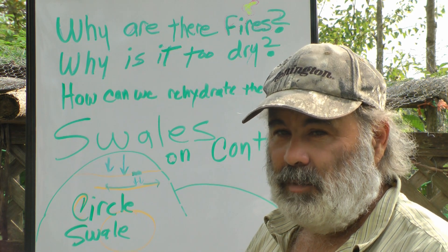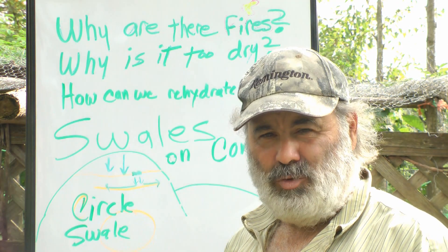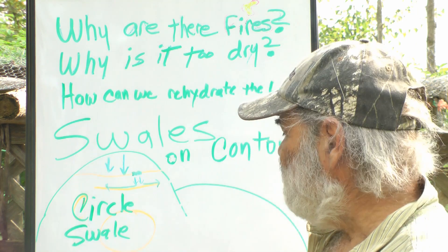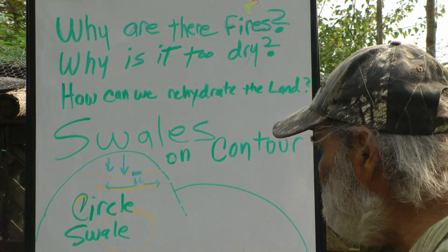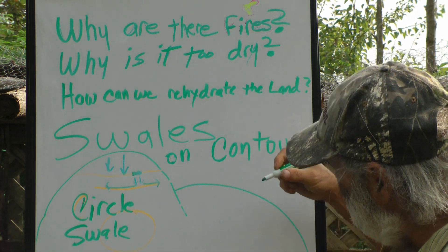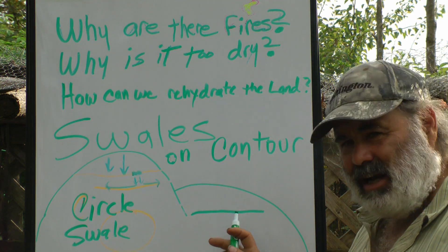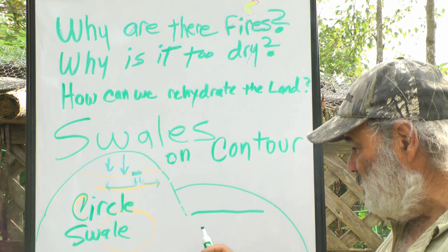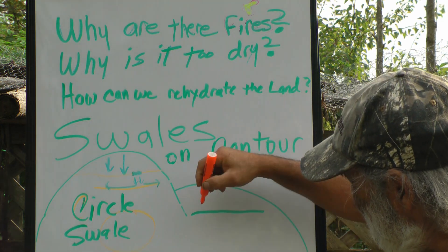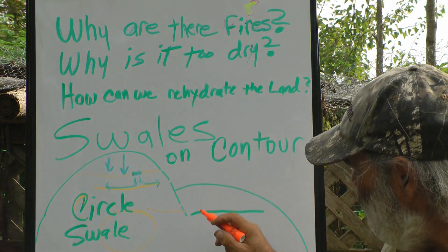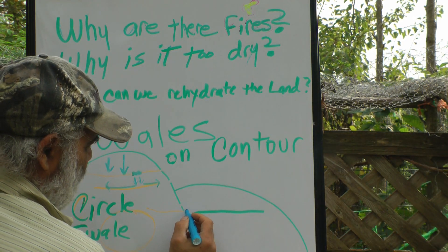I don't think anybody would have considered this before all these fires, but now we're having all these fires and there's a legitimate question: how can we rehydrate the land so we don't have fires? Maybe there's a large flat area here that's relatively on contour. A lot of these deserts are pretty close to being on contour, and you can direct one of these swale spillways to spread water out across the landscape in all directions.